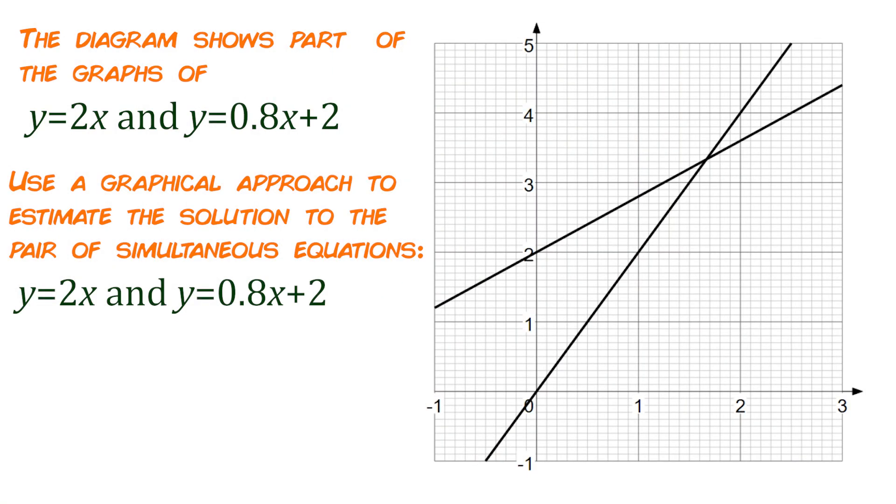The diagram shows part of the graphs of y equals 2x and y equals 0.8x add 2. You can see we've got two straight lines there and then we're being asked to use a graphical approach to estimate the solution to the pair of simultaneous equations, y equals 2x and y equals 0.8x add 2. In other words, the two lines that we've got there.